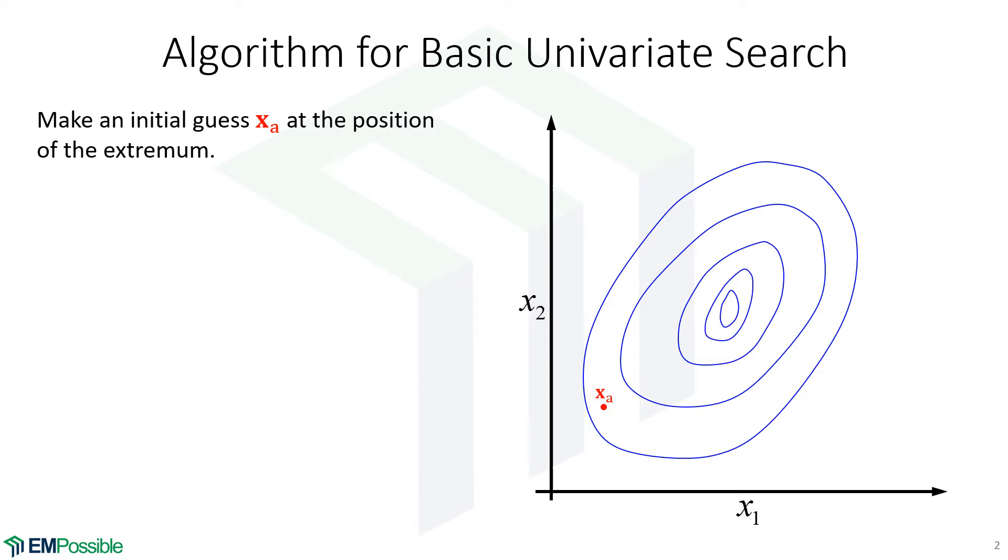From there, we're going to pick one independent variable at a time. So let's start with X1. And we perform a one-dimensional optimization in that direction until we get to a local extrema, which we'll call X sub B in this case.